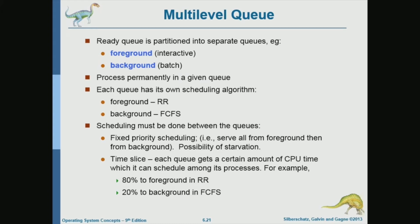Interactive processes are processes that interact with the user. Batch processes are processes that execute longer tasks without interacting with the user, like downloading a big file from the internet, doing image processing, or compressing and decompressing a file.